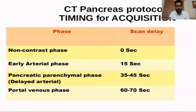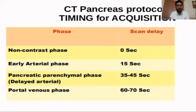The timing of the CT pancreas protocol for acquisition: in the non-contrast phase, it is 0 seconds. Early arterial phase is at 15 seconds. The pancreatic parenchymal phase, also known as the late arterial phase, is from 35 to 45 seconds. The portal venous phase is at 60 to 70 seconds.